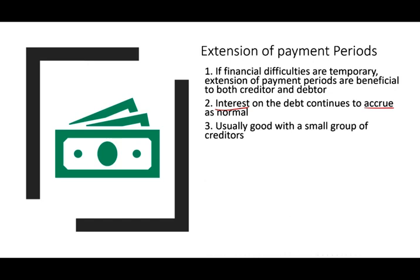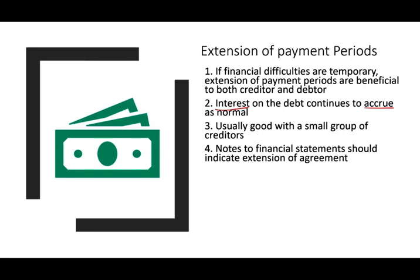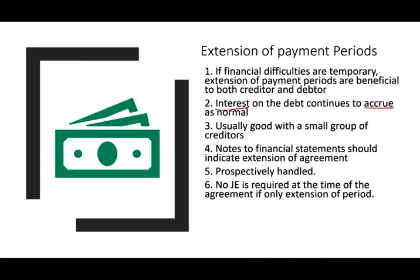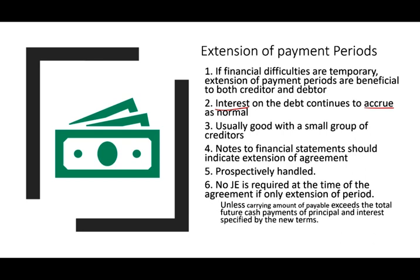Usually this type of arrangement works best with small businesses and a small group of creditors, since you have to negotiate with each one separately. The financial statements' notes should indicate the extension of the agreement. It's handled prospectively — you don't have to go back and change anything. Generally no journal entry is required for an extension of the payment period, unless the carrying amount of the payable exceeds the cash payment and interest specified by the new terms, in which case you would recognize a gain.